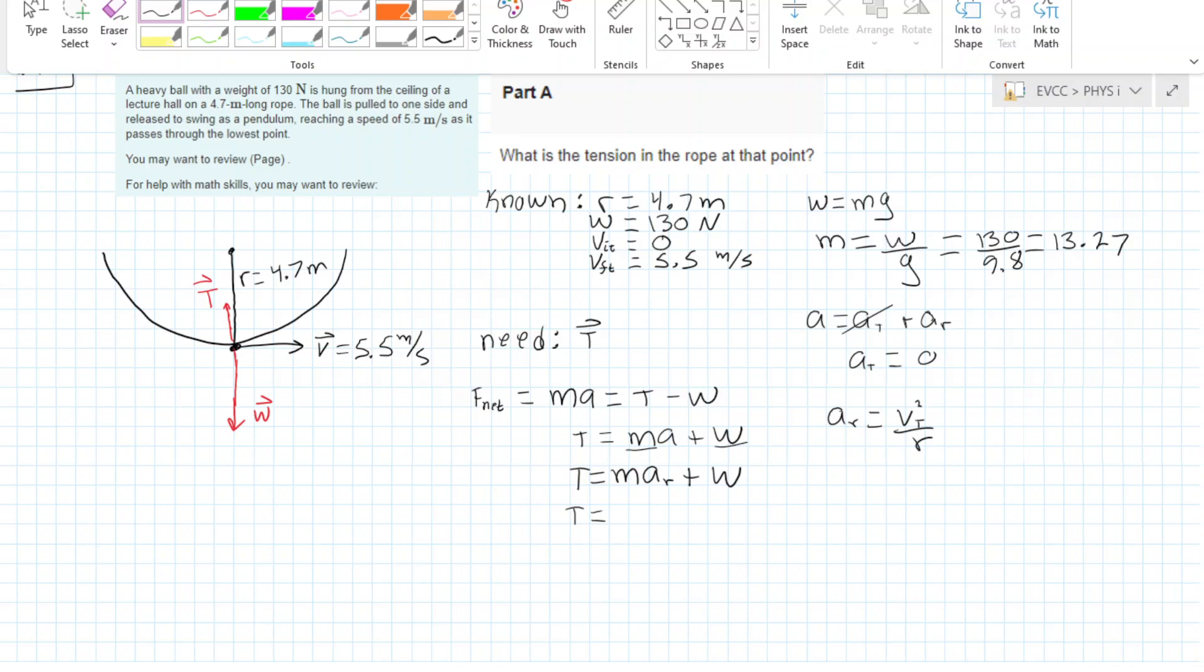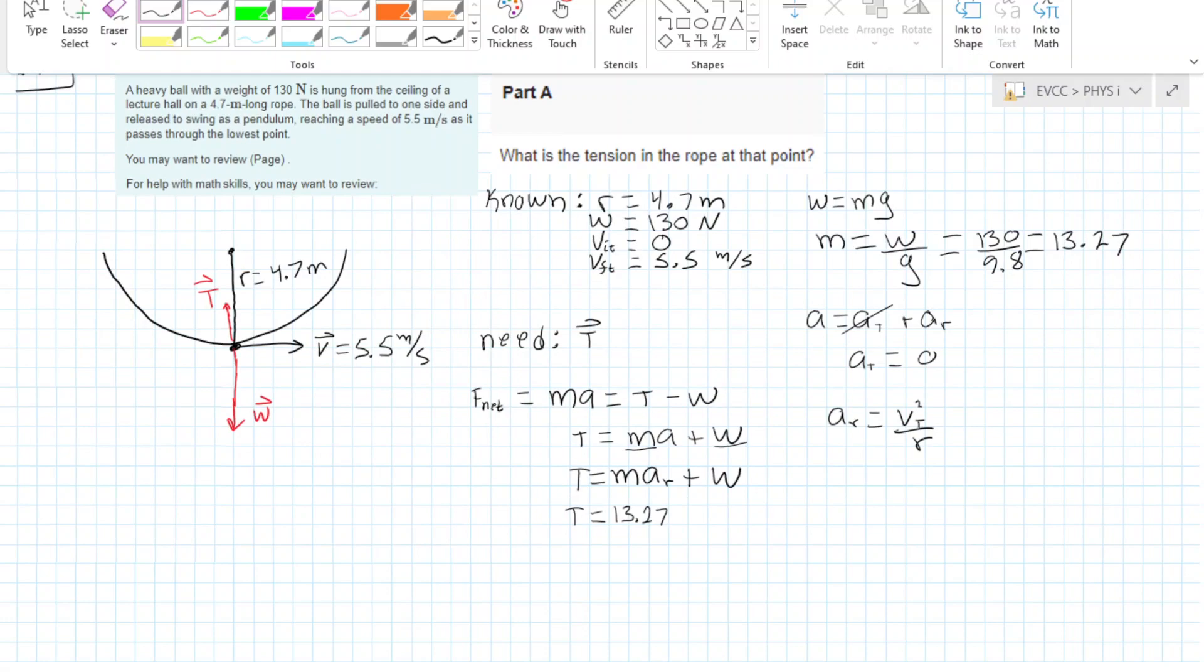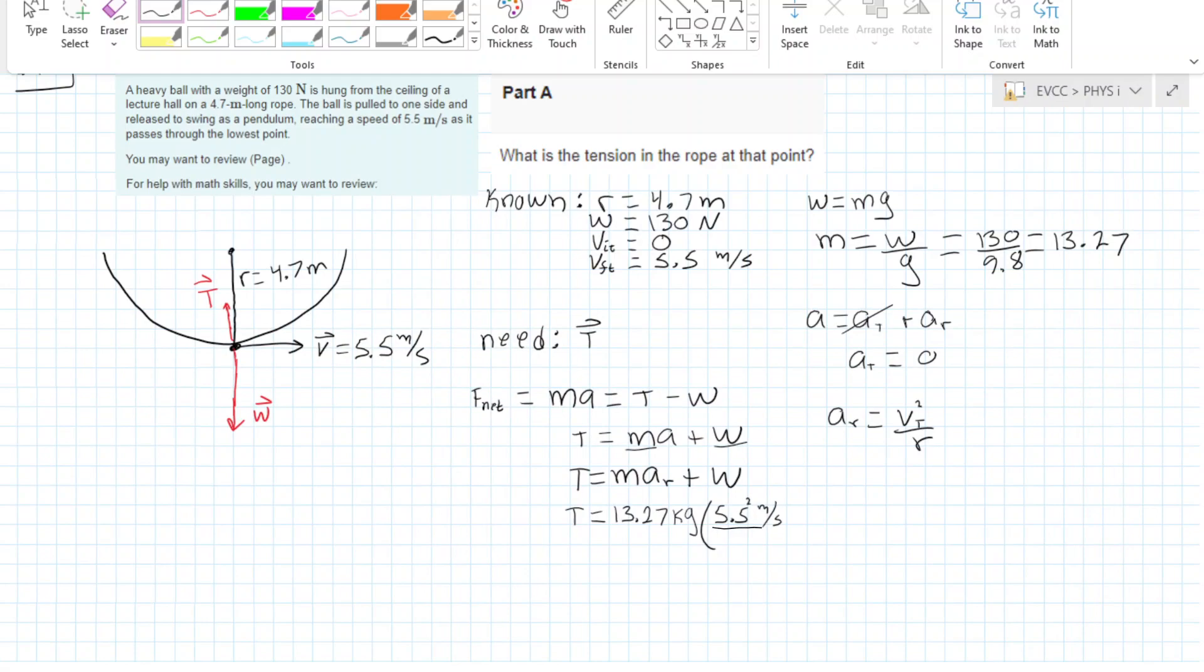So we just plug in all of our numbers, and once you plug this all into a calculator, you end up with 215 newtons if you round. And that's it.